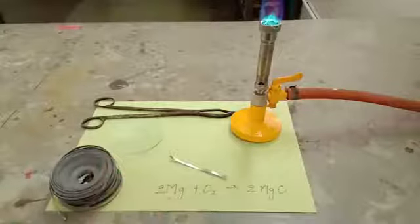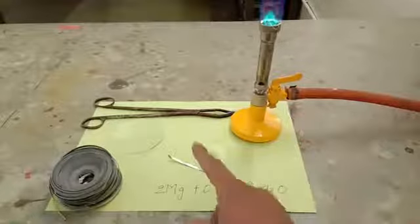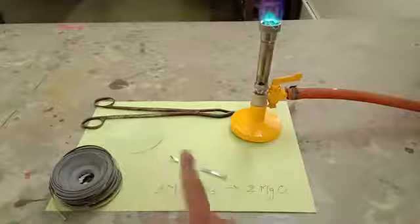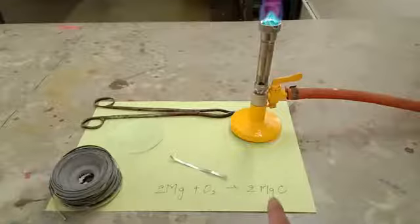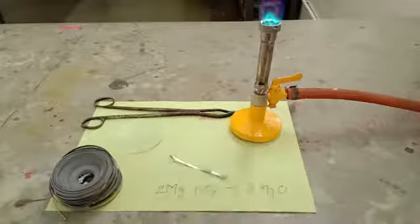This is the magnesium ribbon and this is Bunsen's burner and a watch glass in which I am going to collect the magnesium oxide which is white in color. These are the pair of tongs.